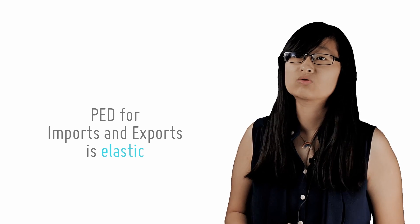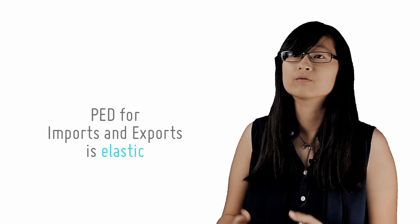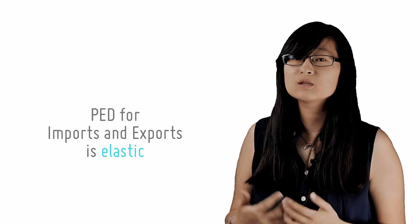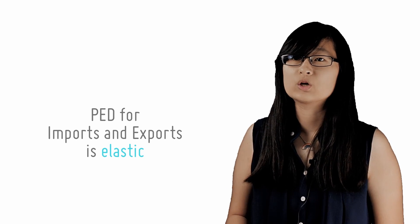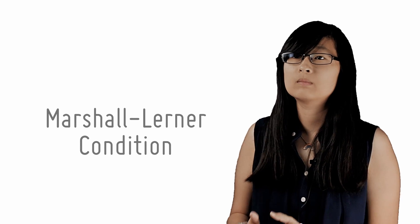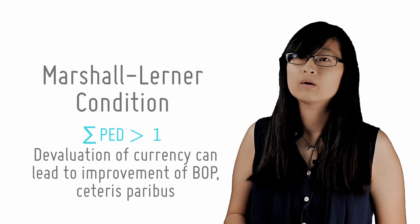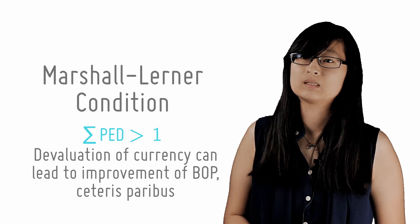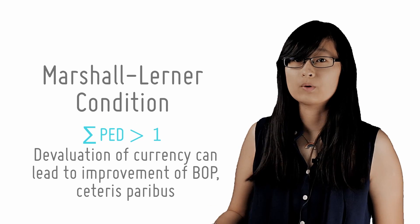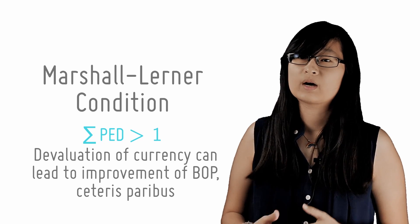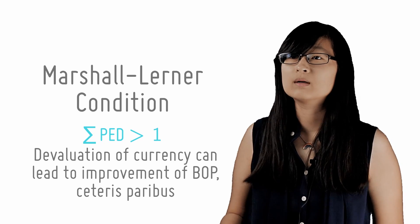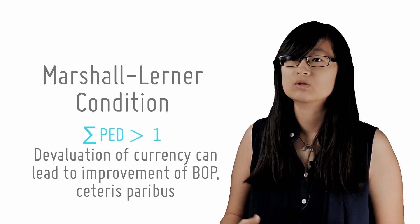Despite this, Singapore still adopts an exchange rate policy as our preferred monetary policy. This is because the BOP will improve following devaluation so long as the Marshall-Lerner condition holds. The ML condition states that as long as the sum of price elasticity of demand for imports and exports is greater than one, a devaluation of our country's currency can lead to an improvement in BOP, ceteris paribus.